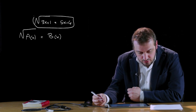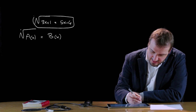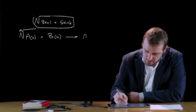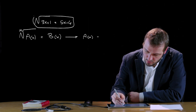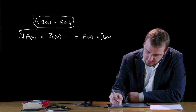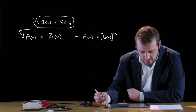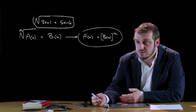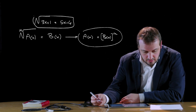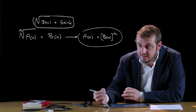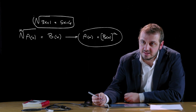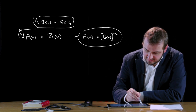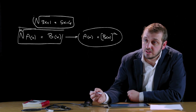Una volta isolato il radicale, è possibile elevare all'indice ennesimo sia il primo che il secondo membro, trasformando l'equazione nella forma a(x) uguale b(x) alla n. Si va quindi a risolvere questa equazione, che diventa un'equazione di grado n, trovare le soluzioni e poi verificare se quelle soluzioni fanno parte del dominio di esistenza precedentemente individuato.